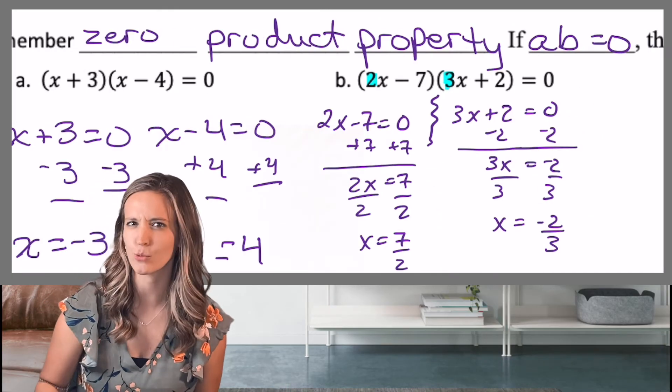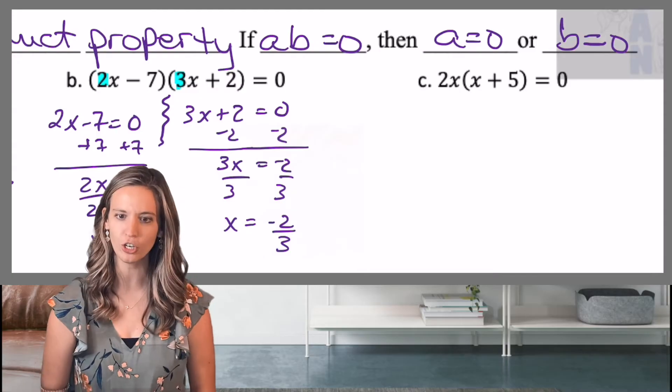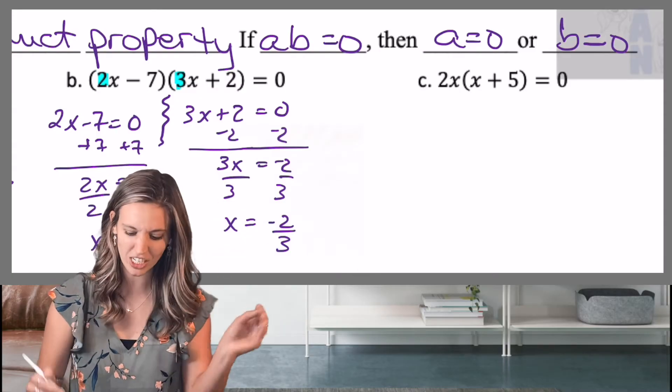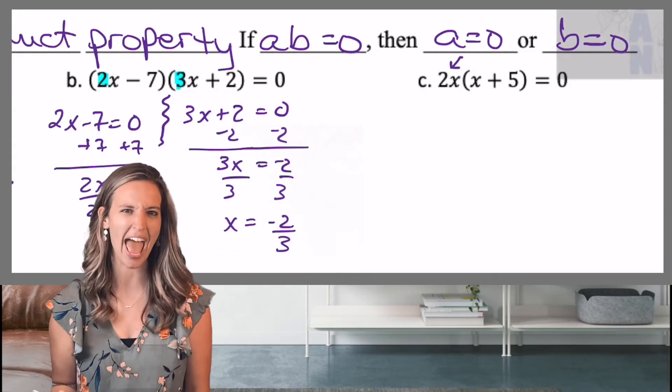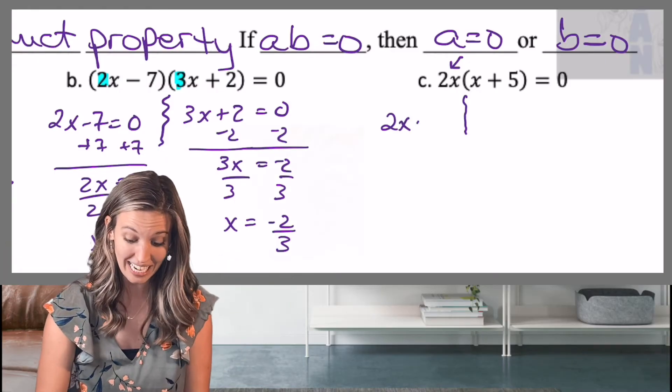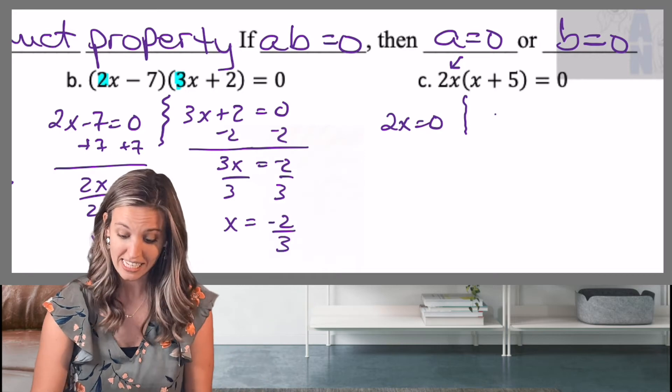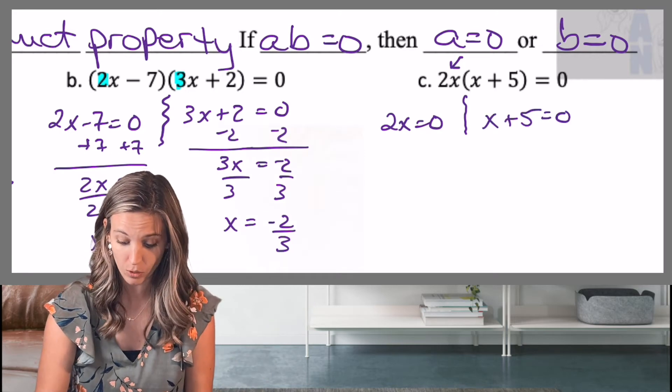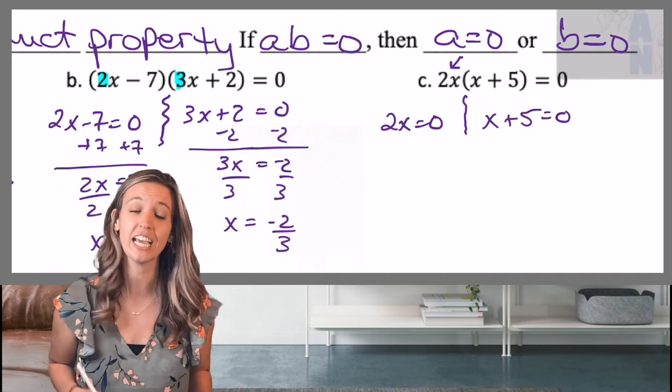Let's look at this next one. This one definitely looks different than the other two. Why? Because I have that GCF out in front, that two X. So it's still a factor, so I can still set that equal to zero. Two X equals zero, zero product property. Set up my other factor, X plus five equals zero, zero product property. Take a minute, solve.